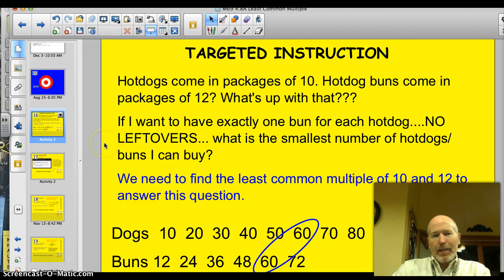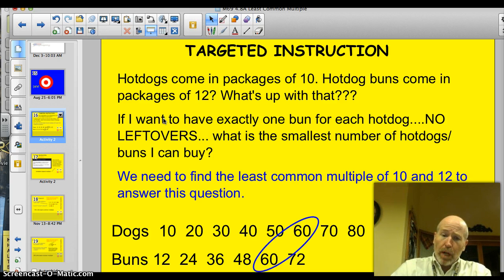Alright, hot dogs come in packages of 10. Hot dog buns come in packages of 12. First of all, what's up with that? Doesn't make any sense to me. Anyway, if I want to have exactly one bun for each hot dog, no leftovers, no waste, what is the smallest number of hot dogs and buns that I can buy? Well, in order to solve this problem, we need to find the least common multiple of 10 and 12 to answer the question. So, that's what I did.